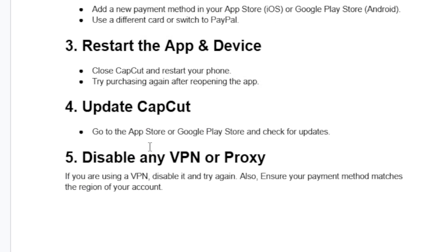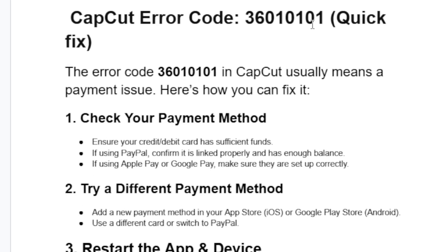Another step to try is to disable any VPN or proxy. If you're using Private Relay on your iPhone, also disable it. If you're using a VPN, disable it and try again. Also ensure your payment method matches the region of your account. This is the best way to fix this error — the couldn't pay error with error code 36010101.